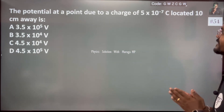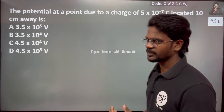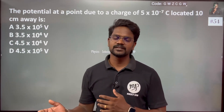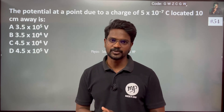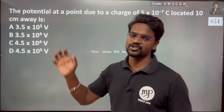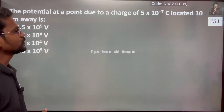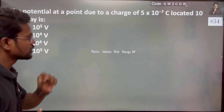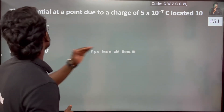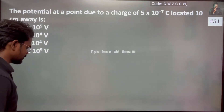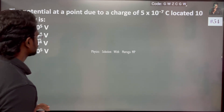The question is: find the potential at a point due to a charge. The potential at a point due to a charge of 5 × 10 to the power minus 7 coulombs, located 10 centimeters away — what is the potential?